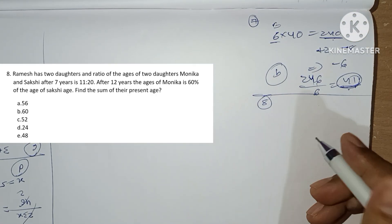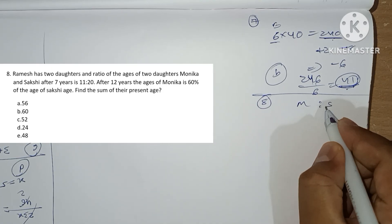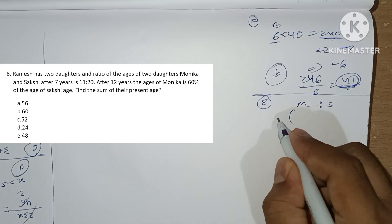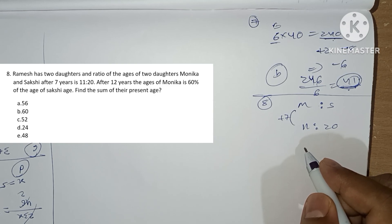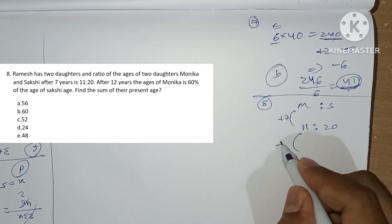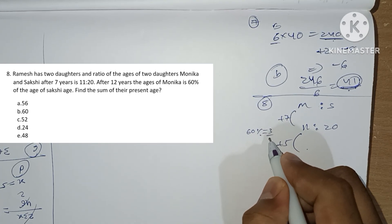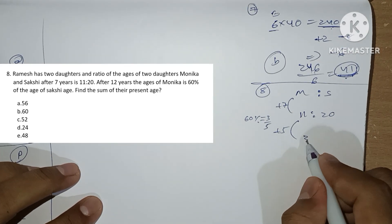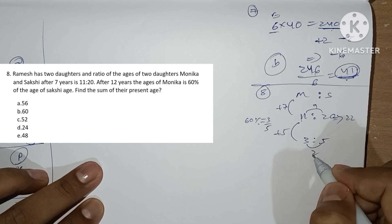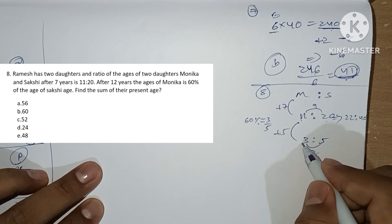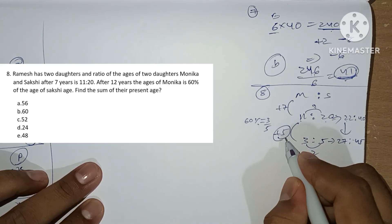Question 8: Ramesh has two daughters, Monica and Satshi. After seven years the ratio of their ages is 11 to 20. After 12 years (i.e., 7 + 5 years) Monica's age is 60% of Satshi's age, giving a ratio of 3 to 5. The difference in the first ratio is 9 and in the second is 2. Multiplying to equalize: ratios become 22:40 and 27:45. Since the 5-year gap corresponds to 5 parts, 1 part equals 1 year.